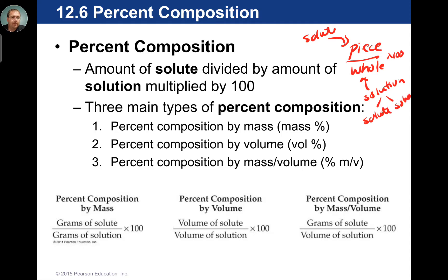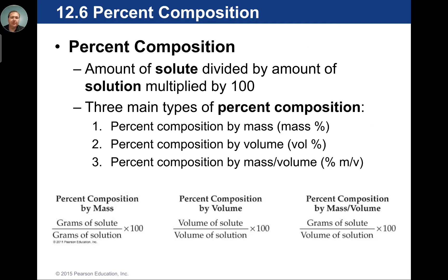A common mistake is that students put solute divided by solvent, but that's nothing other than a ratio. You have to include both pieces as part of the whole. For example, if you have salt and water, you need to include both on the bottom — otherwise you get a ratio, not a percentage.